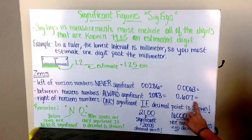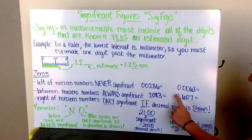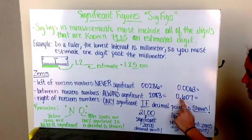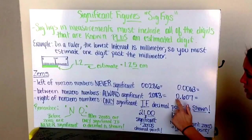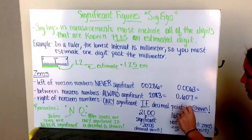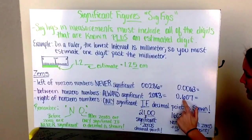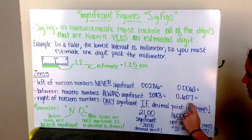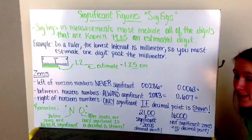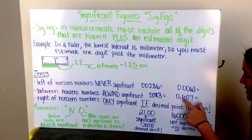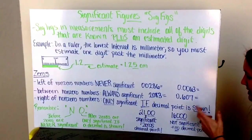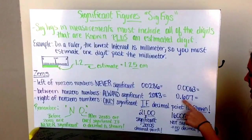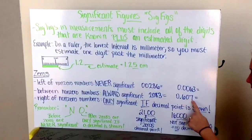In 0.607, from before we learned that any zeros before non-zero numbers don't count, so we don't care about this guy. But all my numbers here, my 6, 0, and 7, well this zero is in between non-zero numbers, and so this means it's holding a place. It's saying that I have precisely 607 tenths of whatever I'm measuring. This number has 3 significant figures.